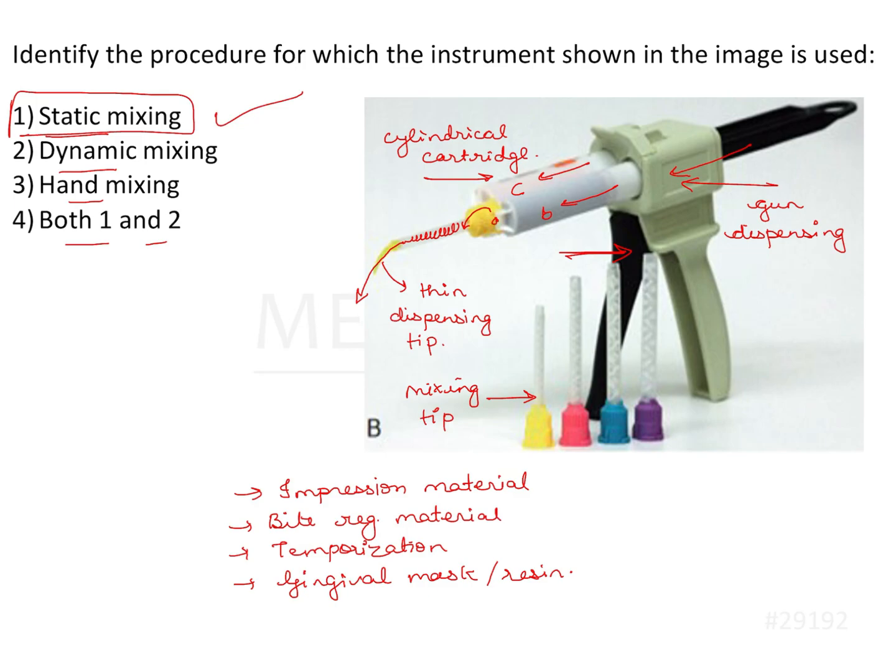Sometimes the cartridge may get clogged. So it is advisable that you wipe off or bleed the cartridge - that means you extrude some amount of material before attaching the tip. That is one disadvantage of using this technique.